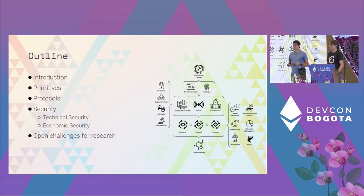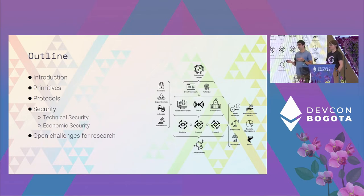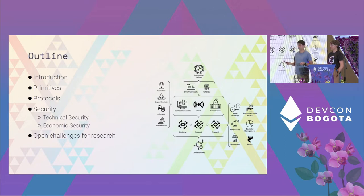Here's a quick outline of what we'll be presenting today. This talk is meant to be fairly accessible, so we'll start by presenting a bit on the different primitives used in DeFi, then present a couple of protocols that can be built. After that, we'll get into the main part of the talk — explaining what technical security and economic security are — and finally present a few open challenges for research with a focus on these different types of security.